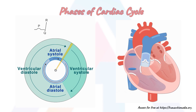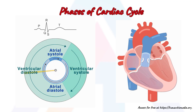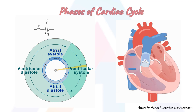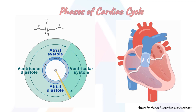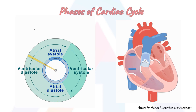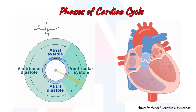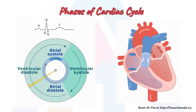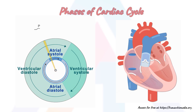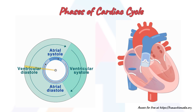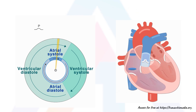Blood flows into the right atrium from the superior and inferior vena cava as well as the coronary sinus, and into the left atrium from the four pulmonary veins. The two atrioventricular valves — the tricuspid and the mitral valves — are both open, so blood flows unimpeded from the atria into the ventricles. Approximately 70–80% of the ventricular filling occurs by this method. The two semilunar valves — the pulmonary and the aortic valves — are closed, preventing backflow of blood.